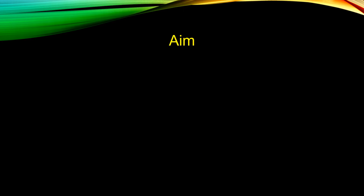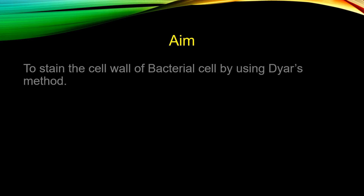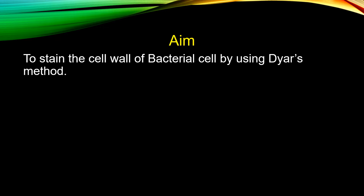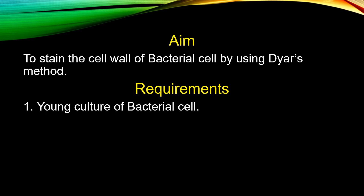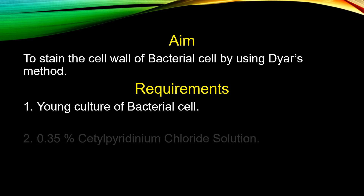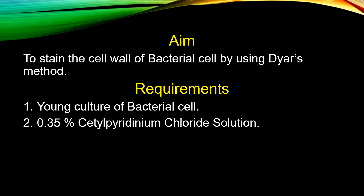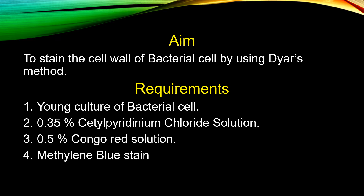Now let's see the aim and requirements of this staining. The aim is to stain the bacterial cell wall by using Dyer's method. The requirements are: a young culture of bacterial cell, 0.35% cetylpyridinium chloride solution, 0.5% congorex solution, and methylene blue stain.